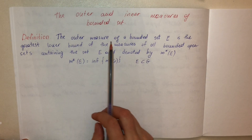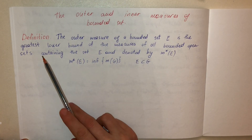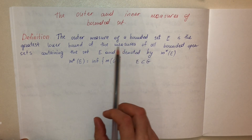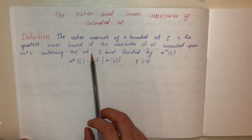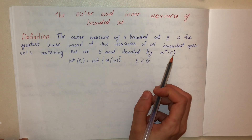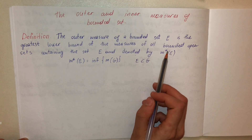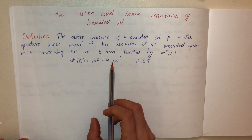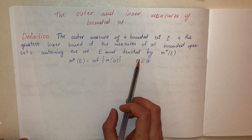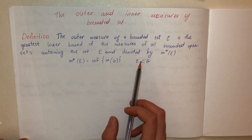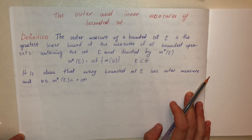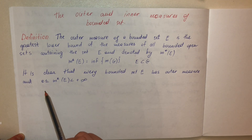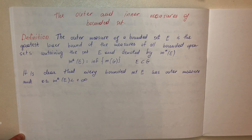Definition: The outer measure of a bounded set E is the greatest lower bound — that is, the infimum — of all the measures of all bounded open sets containing the set E, denoted by M* E. So M* E equals the infimum of the measures of G, where E is a subset of G. Every bounded set E has an outer measure, and this measure is between zero and positive infinity.